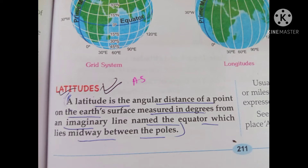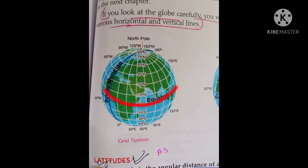The longest latitude is the equator, which lies midway between the poles — that means in the middle portion between the north pole and south pole.